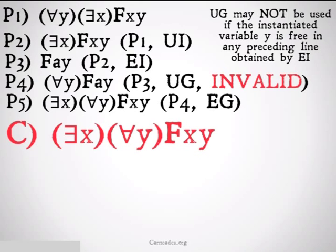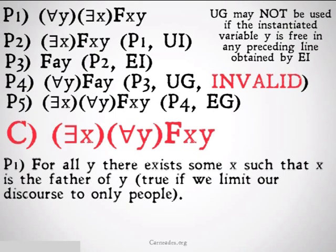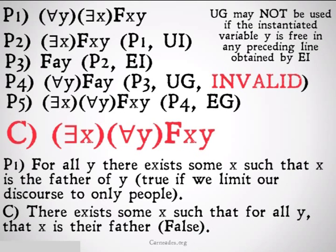As we've already seen, 'there exists an X such that for all Y, X bears relation F to Y' is something very different from 'for all Y there exists an X.' A concrete example: premise 1 says 'for all Y, there exists some X such that X is the father of Y' — this is true if we just limit our scope to people. But the conclusion would be 'there exists some X such that for all Y, X is their father' — that there is one X that is the father of everything. Even if you believe in God and believe someone is the father of everything, it does not follow simply from everyone having a specific father.